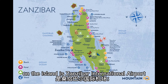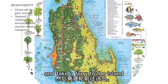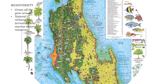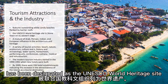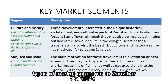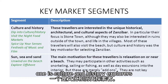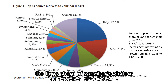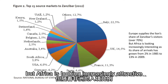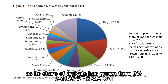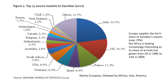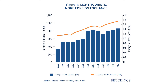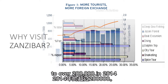The main airport on the island is Zanzibar International Airport. Tourists can fly into Dar es Salaam and take a ferry to the island. Zanzibar features outstanding white sandy beaches flanked by barrier reefs. Stonetown on its western edge has been designated as a UNESCO World Heritage Site. There are mainly two types of market segments: culture and history explorers, and sun, sea, and sand tourists. Europe supplies over 70% of Zanzibar's visitors, but Africa's share has grown from 2% in 1985 to 13% in 2009. Tourist arrivals have experienced a tenfold increase in the last 30 years, from around 20,000 in 1985 to over 200,000 in 2014.